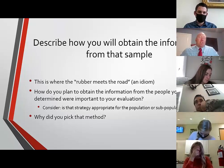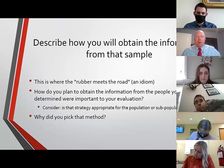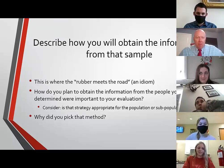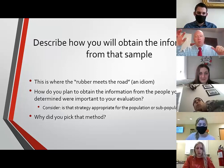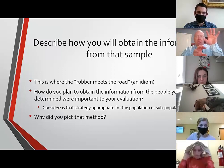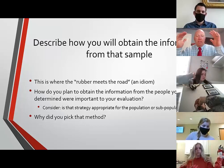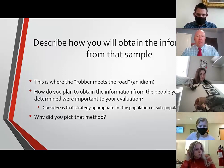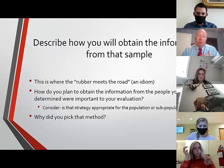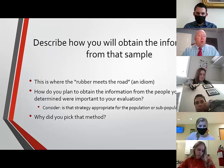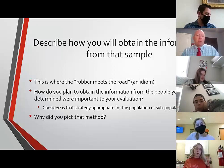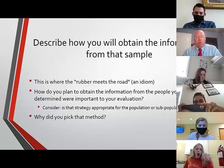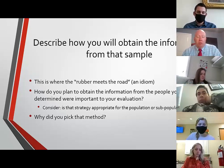Now you also need to describe how you're going to get the information — this is where it all comes together. We've taken the population, the sample size, the method, and now we've got to describe how we're going to get that information from that group of people. Are we going to do it through a qualitative measure like a focus group, an interview, or a record review? Are we going to do it quantitatively through observation, through a survey, through a quantitative interview? You need to at least have a general idea of which strategy you're going to use to get that information.